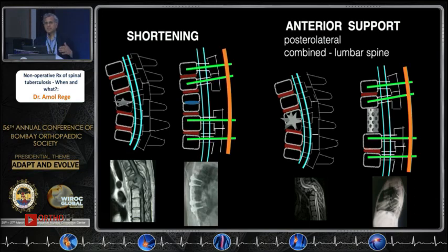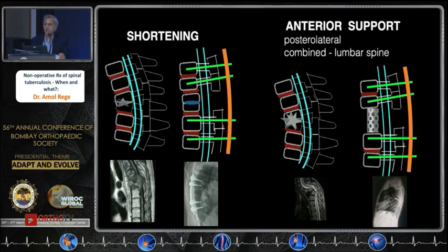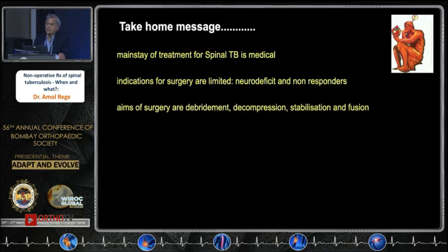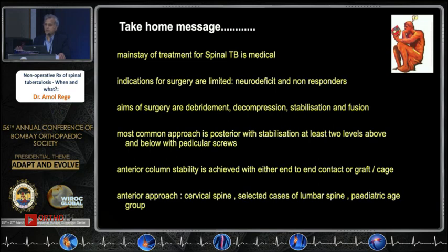In the current era there is a modification: anterior surgery has a limited role. Basically, use posterior pedicular screws two levels above and below, shorten and reconstruct the anterior column. If the defect is significant, use an extended posterior approach — go laterally, excise ribs and facets, and fill the defect with a mesh cage or bone graft. In the lumbar spine, you cannot sacrifice nerve roots, so take a separate retroperitoneal incision and reconstruct the anterior column. Take-home message: mainstay of treatment is medical. Indications for surgery are limited — neuro-deficit and non-responders. Aim is debridement, decompression, stabilization, and fusion. Most common approach is posterior, two levels above and below, with anterior column stability. Anterior approach today has limited indications — probably cervical spine, lumbar spine, and pediatric age group.